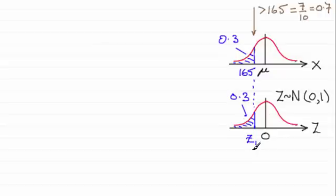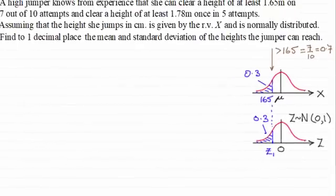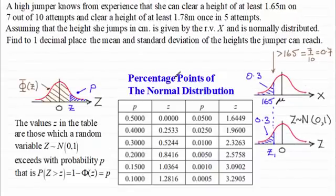Now to calculate z1, I can use either the calculator, which would be the quickest way, or I could use the tables, the percentage points of the normal distribution, which you'll generally find in your formula book. Remember they give you the probability p of being greater than an observed z value. The only problem is the z value has got to be on the right of the mean zero. So just to remind you again, if we're looking this up to get over this problem, what we do is reflect z1 in the axis here. So it occurs on the other side, this area would be 0.3.